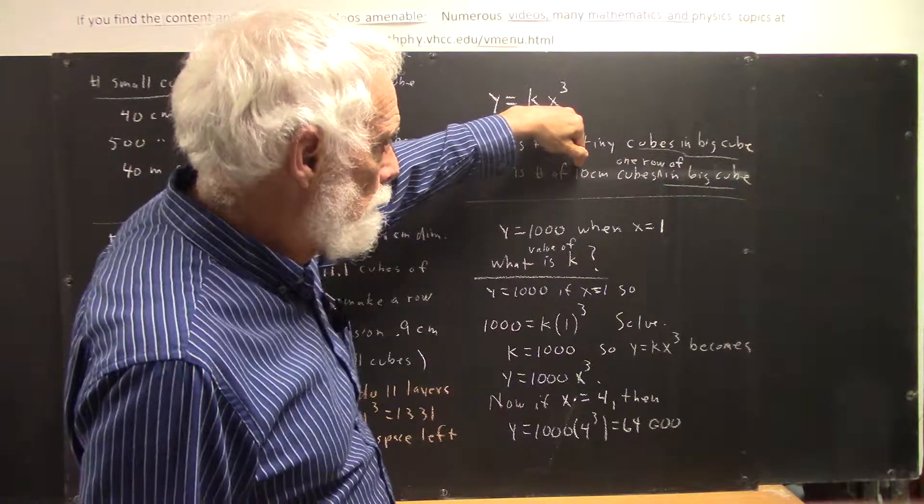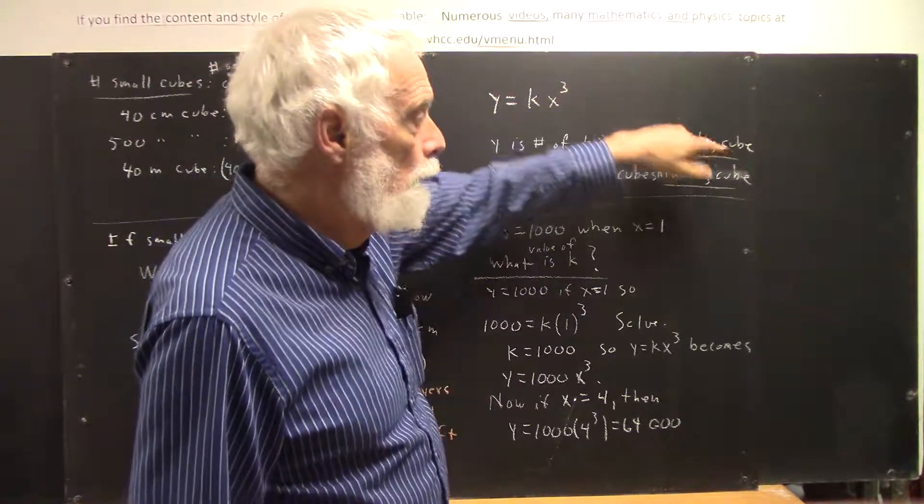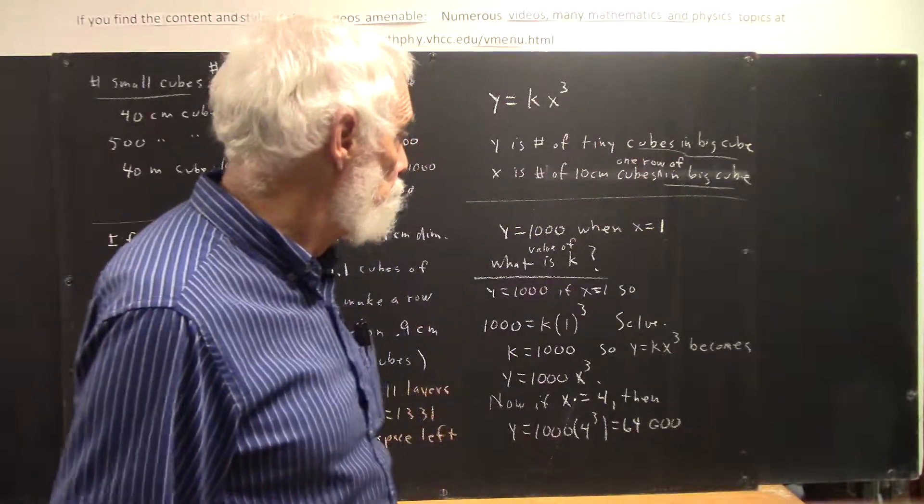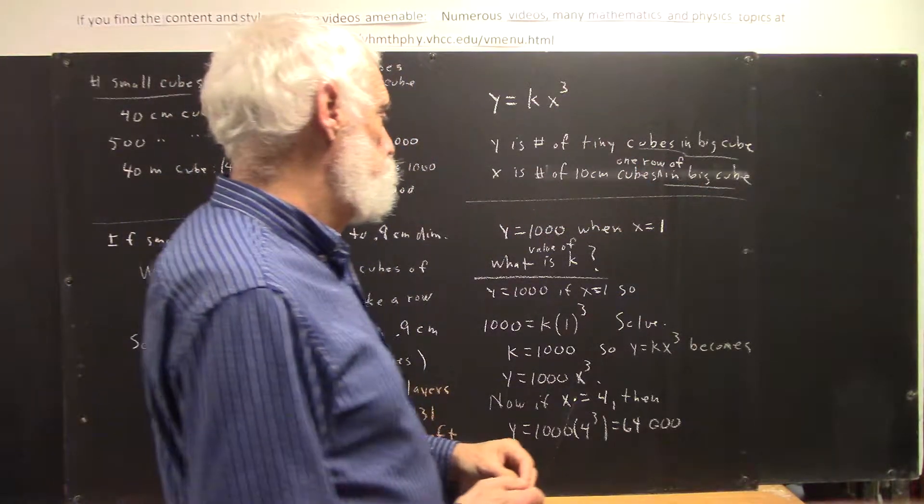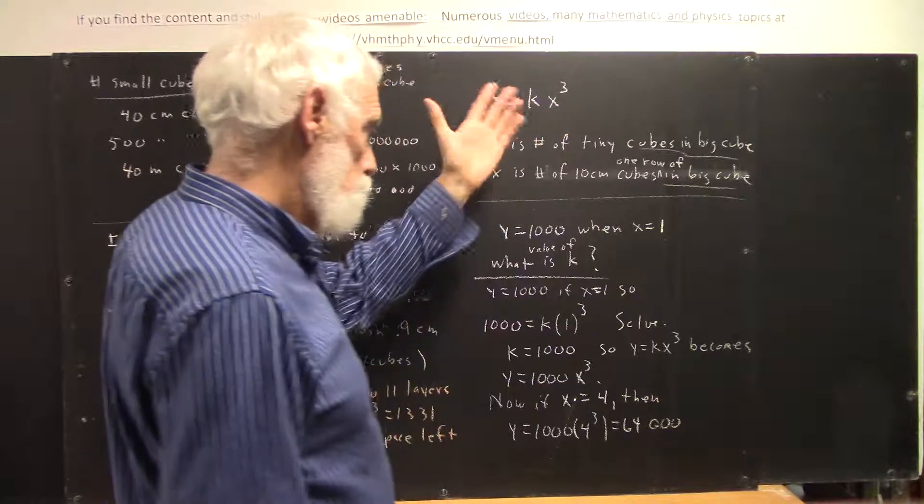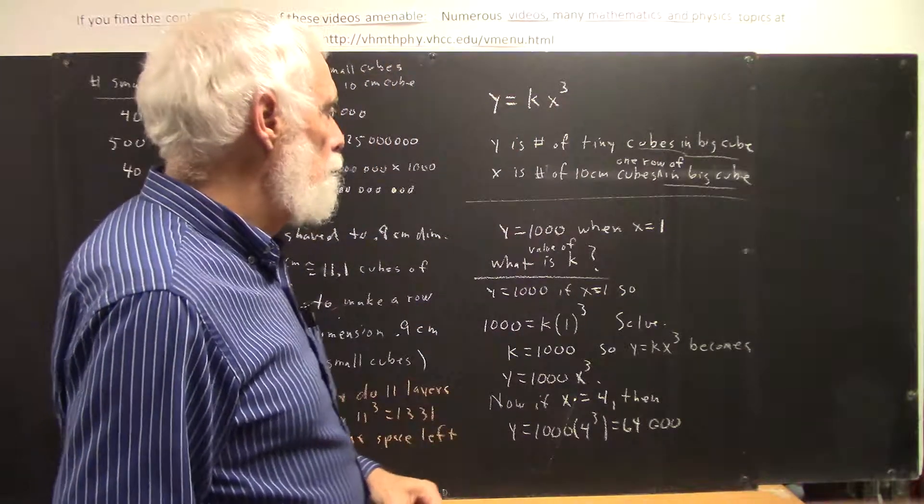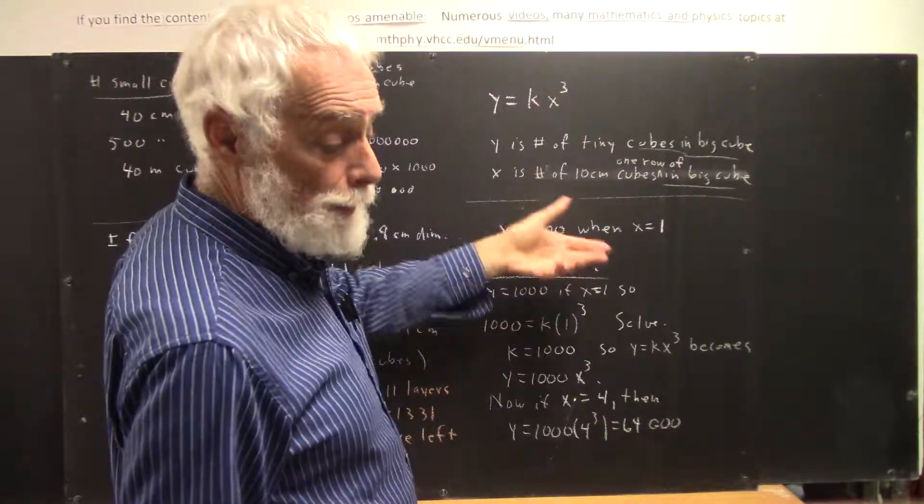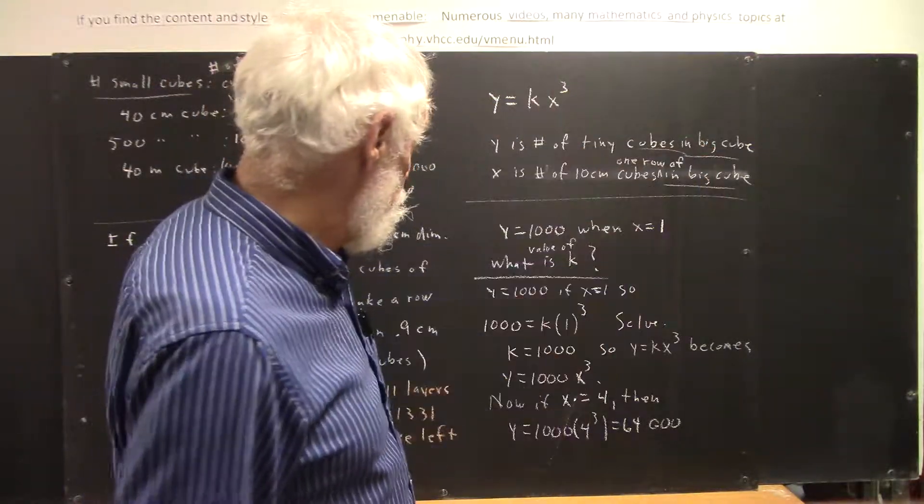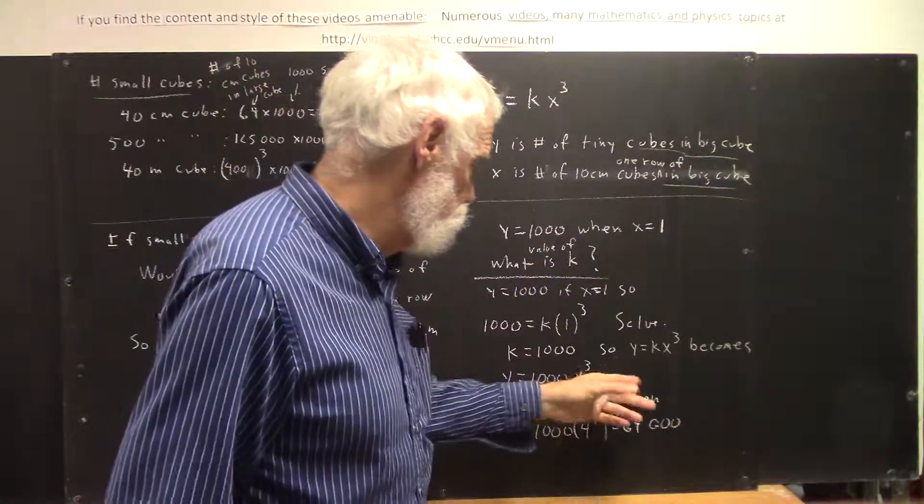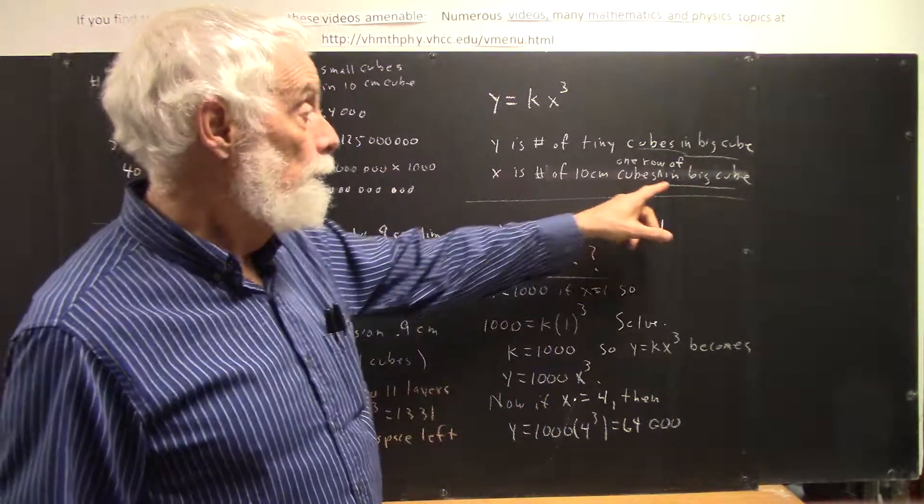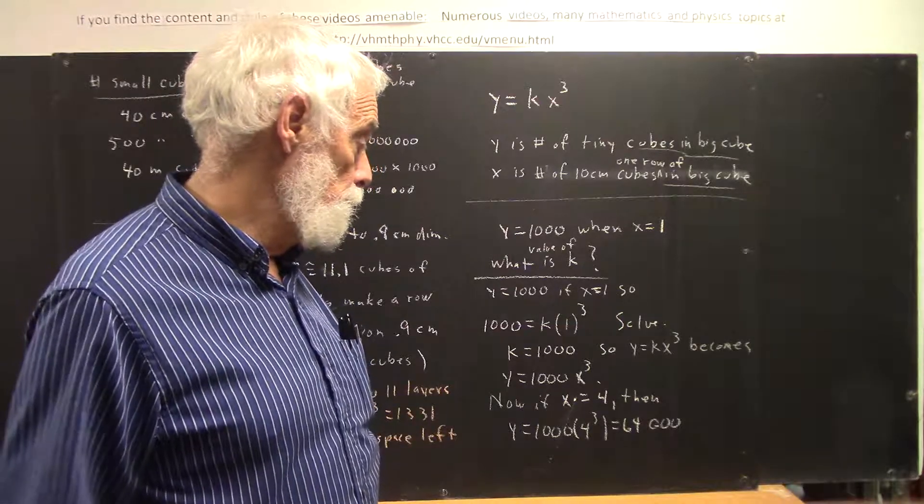X is supposed to be the number of 10 centimeter cubes in one row of your big cube. Not in the whole big cube. This clearly wouldn't work if it was in the whole big cube, you'd just multiply a thousand, or k by x, and you would get it. So if you understand what I just said, don't worry about that. But this is number little cubes in one row of big cubes.